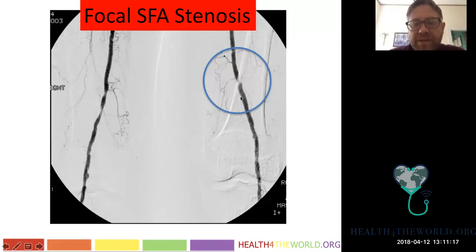The adductor hiatus is also the angiographic landmark where the superficial femoral artery becomes the popliteal artery. Anything above is called the SFA; below is called the popliteal artery.